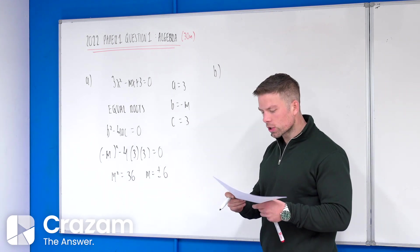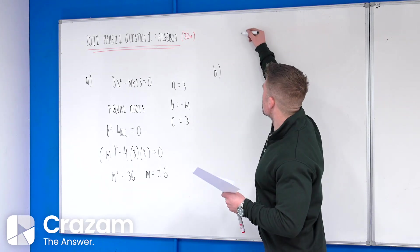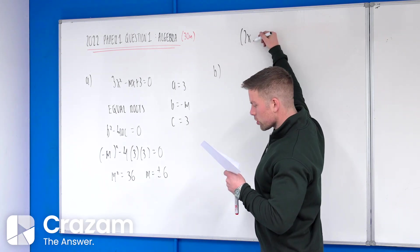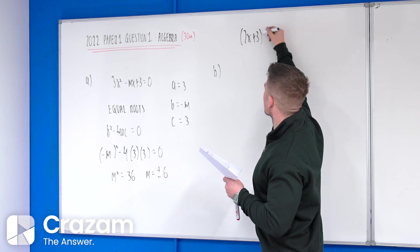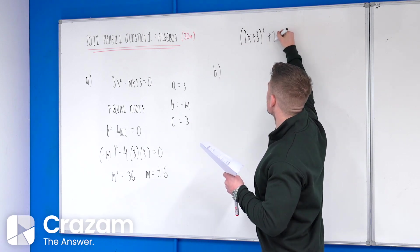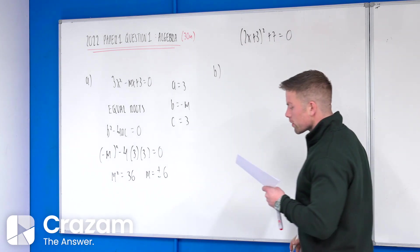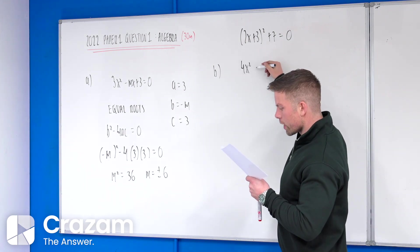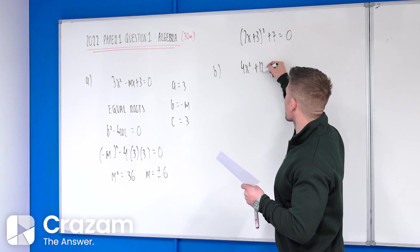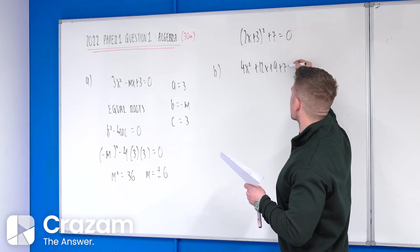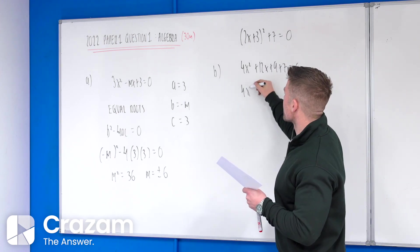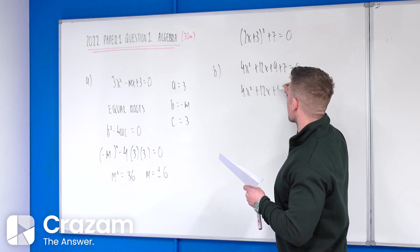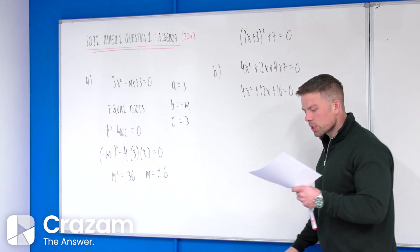Okay, so it has no real solutions. First of all, what I would do is if I turn this equation, the 2x plus 3 squared plus 7 equals to 0, I would turn that into a quadratic. I'd multiply out the brackets, so 4x squared plus 12x plus 9 plus 7 equal to 0, and then I would add the like terms.